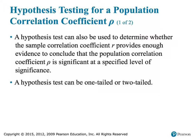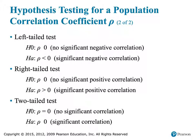A hypothesis test can also be used to determine whether the sample correlation R provides enough evidence to conclude that the population correlation rho is significant at a particular level of significance. Just like our other hypothesis tests, these can be one-tailed or two-tailed depending on how the problem is stated. It is left-tailed if we use a less-than sign in the alternative, right-tailed if we use a greater-than sign, and two-tailed if we use a not-equal-to sign in the alternative.